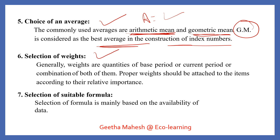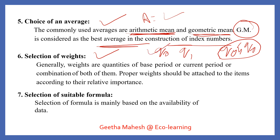The next step is selection of weights, considering both base year weights and current year weights. The final step is selection of a suitable formula. Different formulas are available — such as Laspeyres, Paasche, Marshall-Edgeworth, and Fischer — and you select the appropriate one based on your data and purpose.